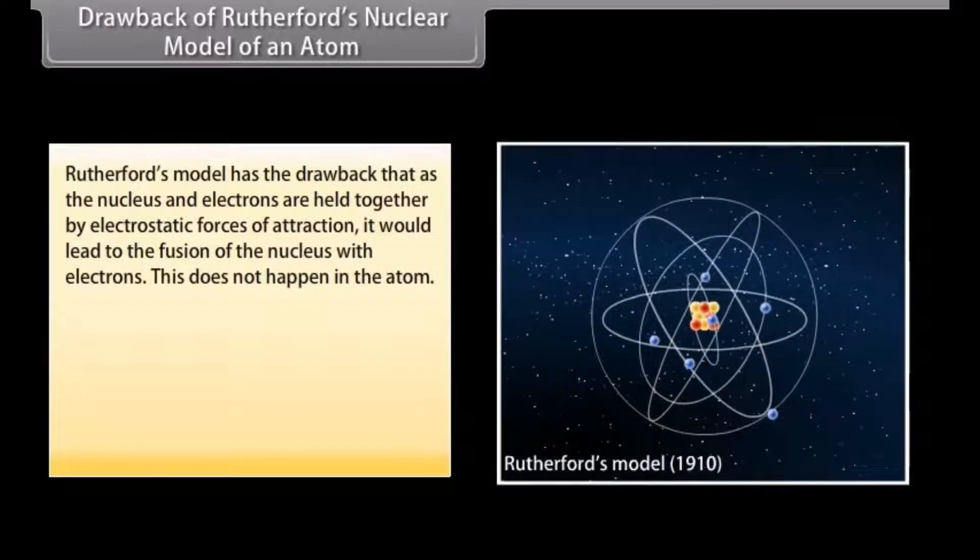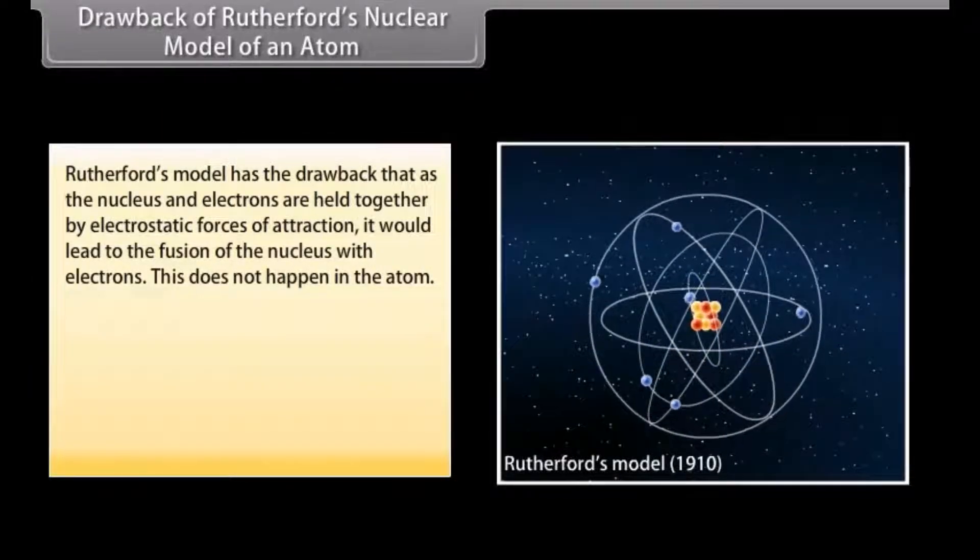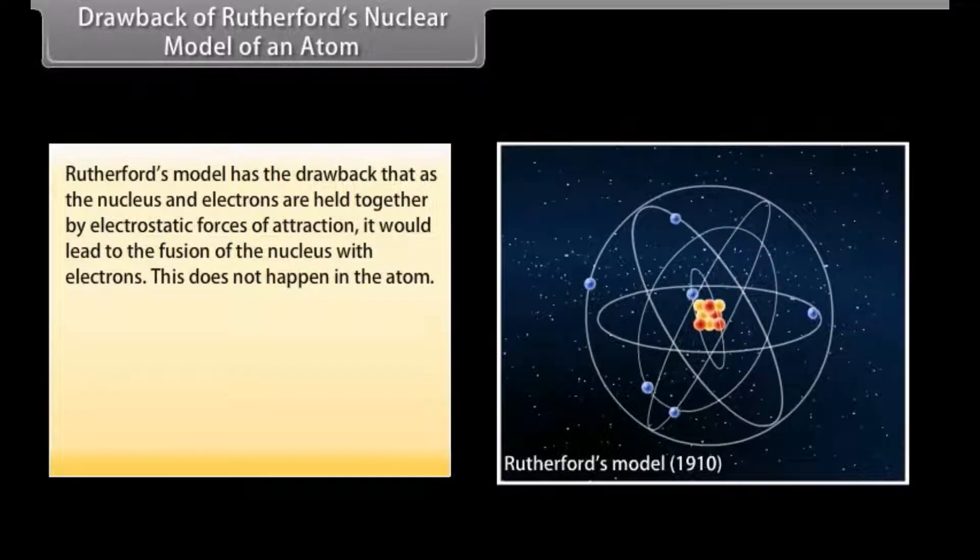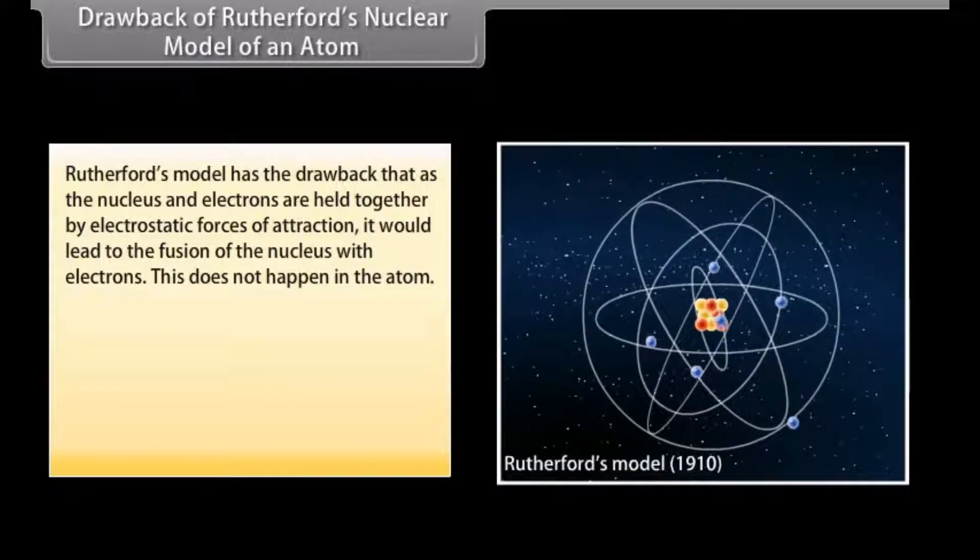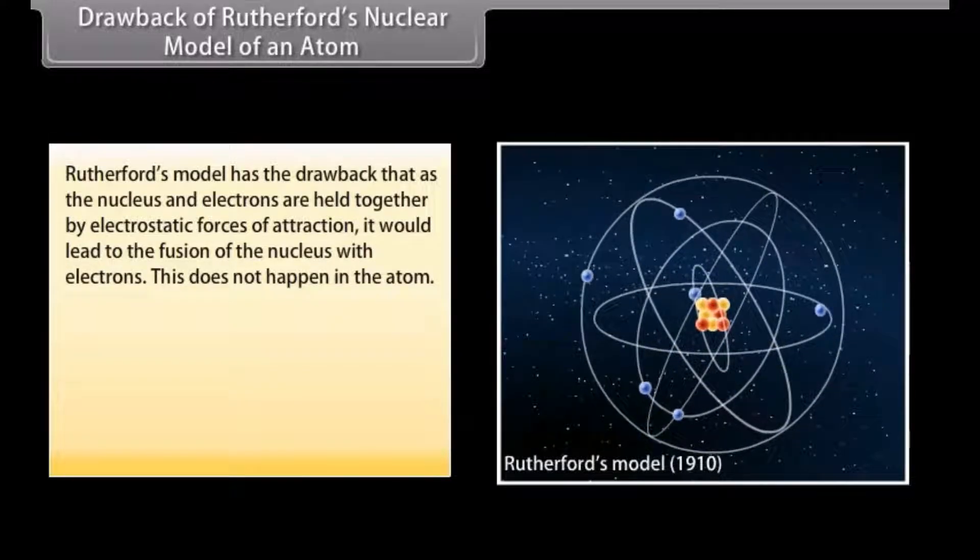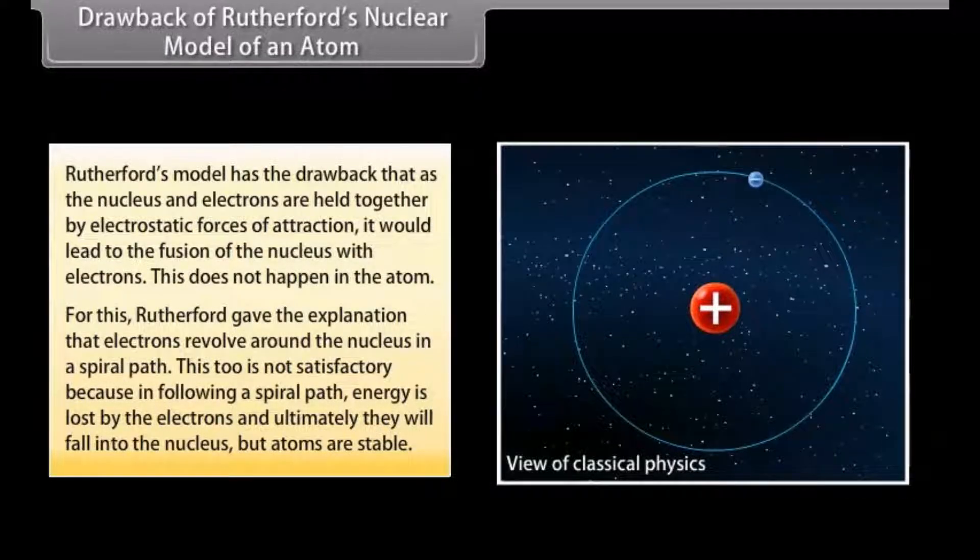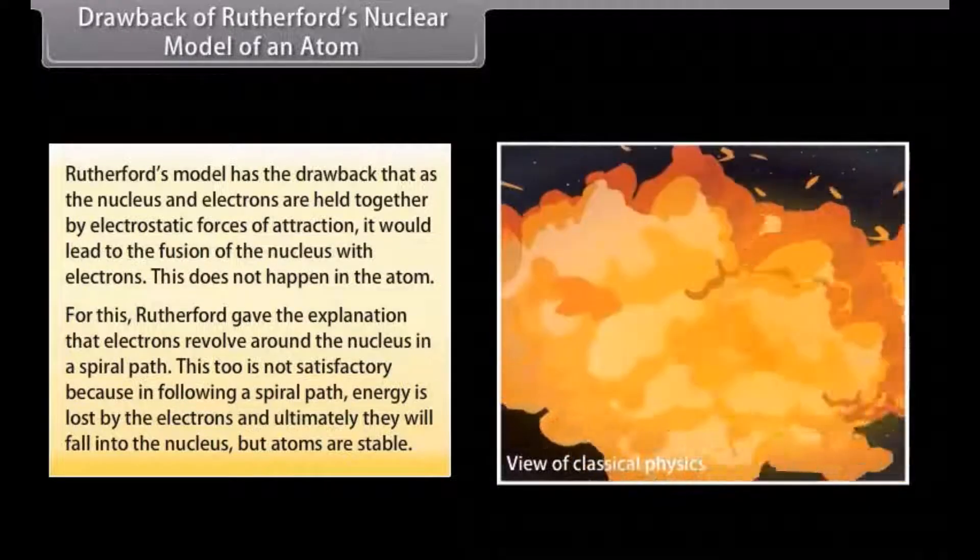Drawback of Rutherford's Nuclear Model of an Atom. Rutherford's model has the drawback that as the nucleus and electrons are held together by electrostatic forces of attraction, it would lead to the fusion of the nucleus with electrons. This does not happen in the atom. For this, Rutherford gave the explanation that electrons revolve around the nucleus in a spiral path. This too is not satisfactory because in following a spiral path, energy is lost by the electrons and ultimately they will fall into the nucleus but atoms are stable.